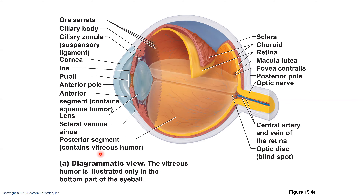The choroid region is the posterior portion. It supplies blood to all layers of the eyeball and has brown pigment that absorbs light to prevent visual confusion. If the light entering the eye were reflected back, it would be too bright and we wouldn't be able to see well, so the choroid absorbs some of that light.